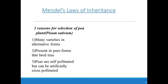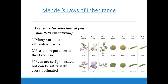Mendel chose the sweet pea plant, Pisum sativum, on the basis of its characters. The plant had various contrasting characters such as length of the plant, flower color, color of the pod, and seed shape — characters visible to the naked eye. Moreover, both self-pollination and cross-pollination were possible in these plants and crossing between them could be controlled. In addition, these plants grow quickly and produce a large number of offspring. Mendel conducted experiments for seven years.